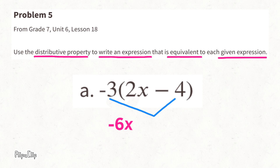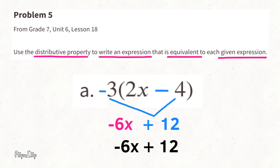A negative times a negative means the opposite of a negative, which is a positive. 3 times 4 is 12. After using the distributive property, we can rewrite this expression.